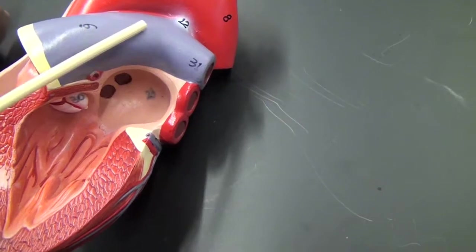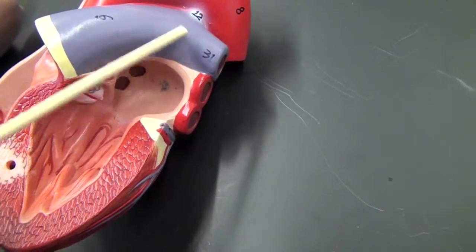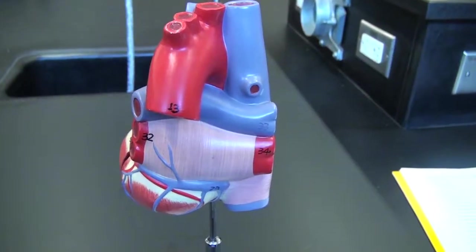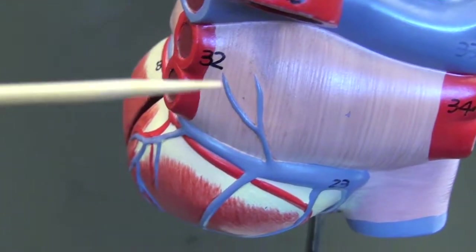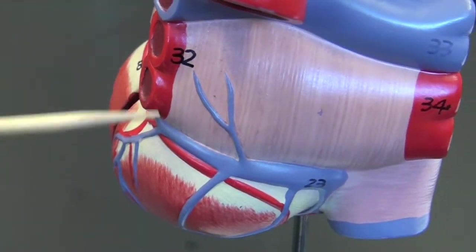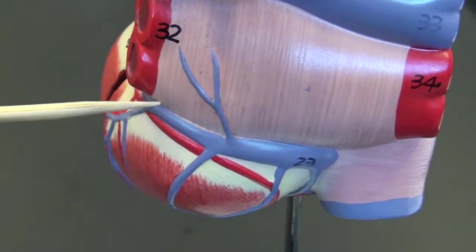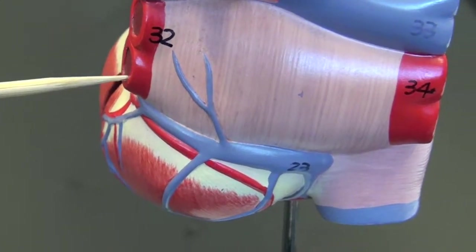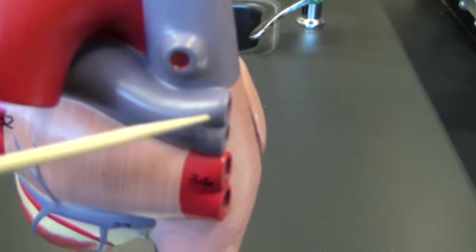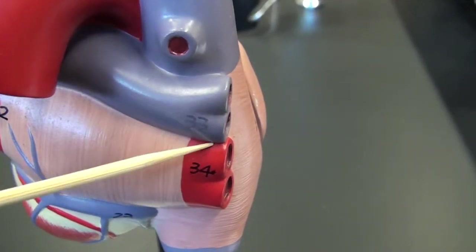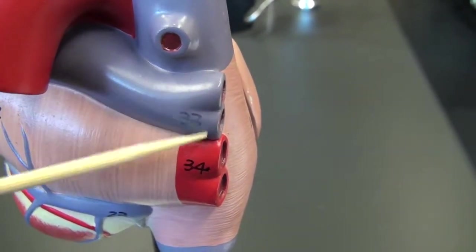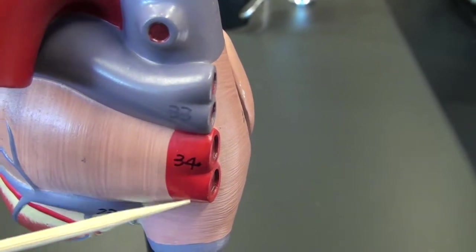This is the left pulmonary artery. On the back side of the heart, these are left pulmonary veins. This is the right pulmonary artery and the right pulmonary veins.